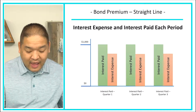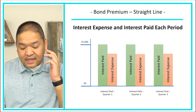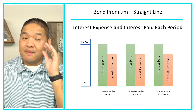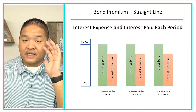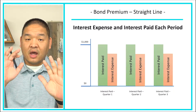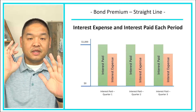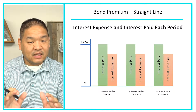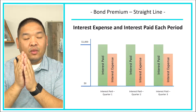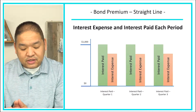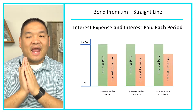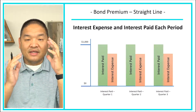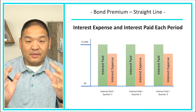At the end of the day, the interest paid is going to be based on the bond's face value times its stated interest rate. That gives us our interest paid, but then we're going to reduce the interest expense by that amortization of the premium.